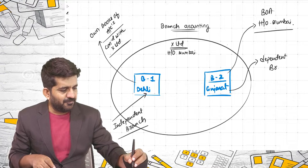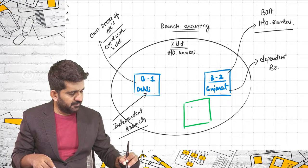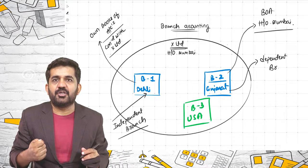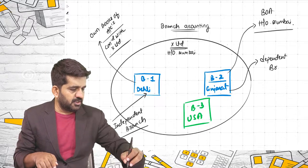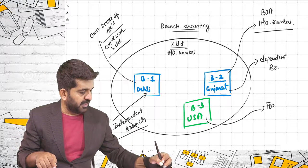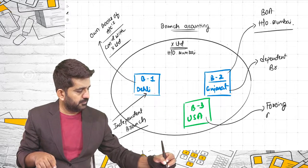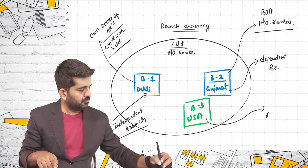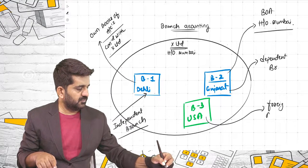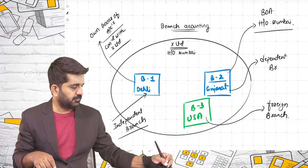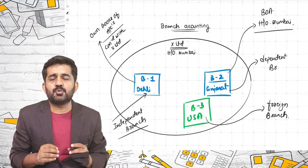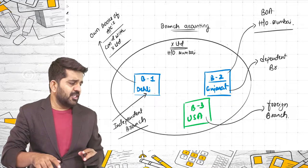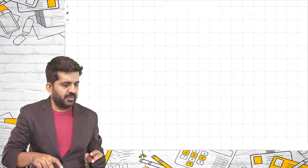Branch Number 3 is in USA, dealing in US dollars. This type of branch is termed a foreign branch. We are going to learn accounting of independent branches, dependent branches, as well as foreign branches. Let us first understand dependent branches.